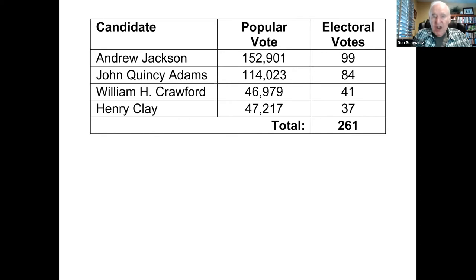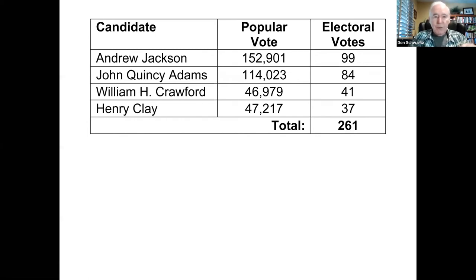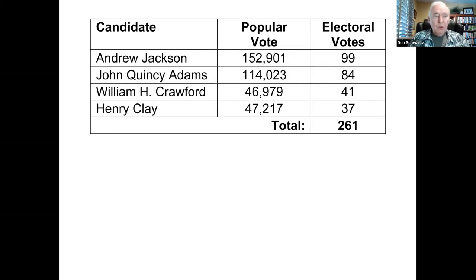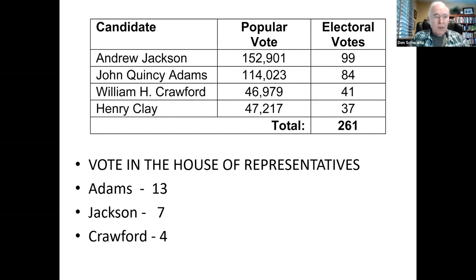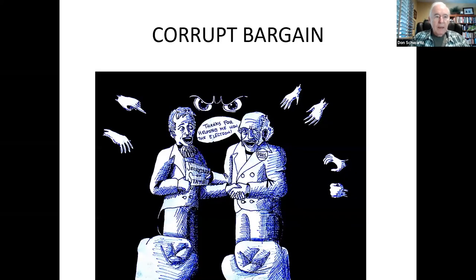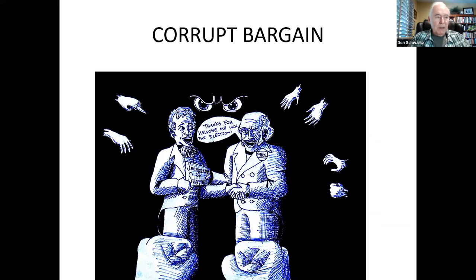Adams' victory shocked Jackson's supporters, who felt that Jackson should have won because he had the most popular votes and the most electoral votes. Jackson was particularly enraged when three days after Clay threw his support behind Adams, the new president appointed Clay as Secretary of State. Jackson and his followers accused Adams and Clay of striking a corrupt bargain because Clay threw his support behind Adams and Adams made Clay Secretary of State.